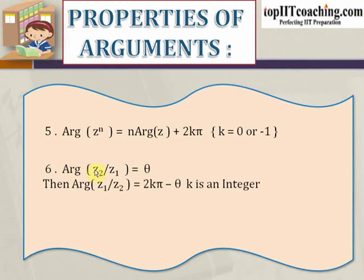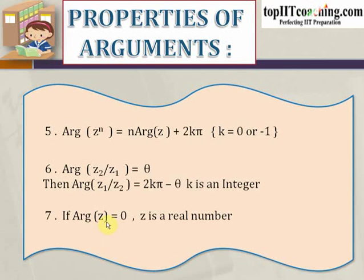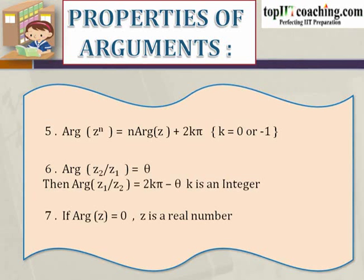The sixth is: if the argument of z1 by z2 is equal to θ, then the argument of z2 by z1 would be equal to 2kπ minus θ, where k is an integer. The next property is: if the argument of z is equal to 0, then z is a real number. Argument represents the inclination of z with respect to the real axis. So if the argument is equal to 0, then z lies on the real axis and z becomes a purely real number. These are some of the very important properties of arguments, and you will find these properties are very similar to the properties we use in logarithms, so remembering them is quite easy.